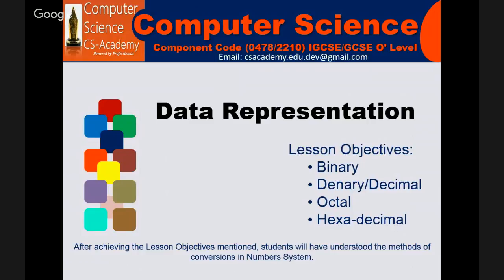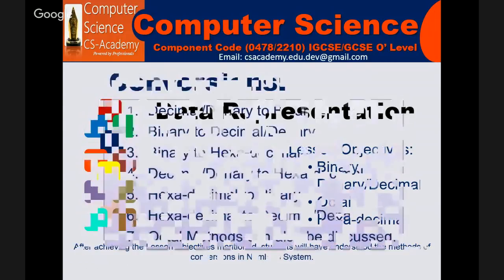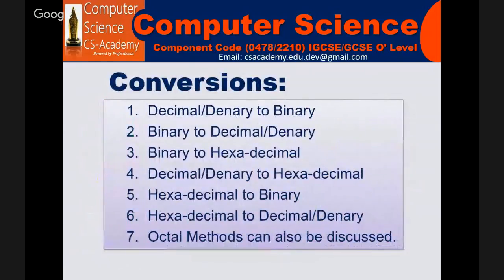Now continuing with the objectives. First is binary. We have several conversions here: decimal to binary, binary to decimal, binary to hexadecimal, binary or decimal to hexadecimal, hexadecimal to binary, and hexadecimal to decimal. The last one is the octal methods that can be incorporated as needed.